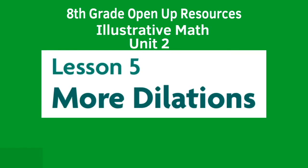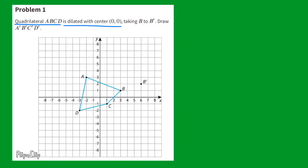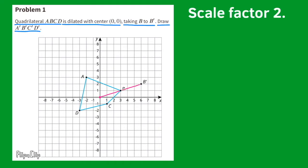8th Grade Open Up Resources, Illustrative Math, Unit 2, Lesson 5: More Dilations. Problem number 1. Quadrilateral ABCD is dilated with center coordinates (0, 0), taking B to B'. Draw A', B', C', and D'. First, identify the center (0, 0). Measure the distance from center to B, then compare to the distance from center to B'. The distance to B' is twice the distance to B, indicating a scale factor of 2. Now, extending from the center through each point with scale factor 2, plot the dilation points. Connect the points to see the dilation A', B', C', and D'.